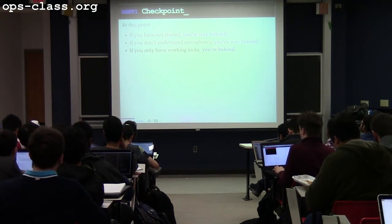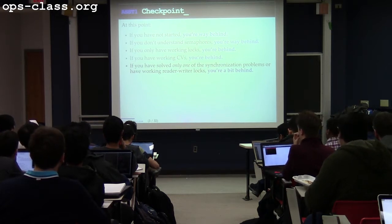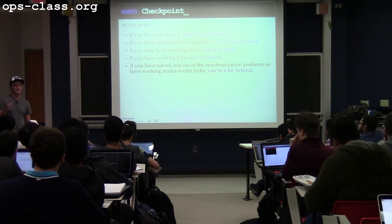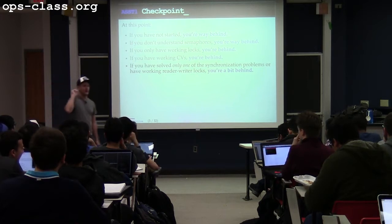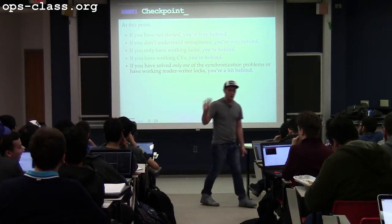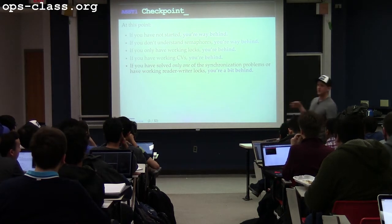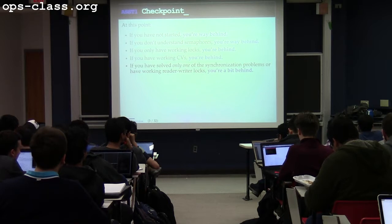Where you should be at this point is working on the second of the three other parts of the assignment — past locks and CVs — which are reader-writer locks, whale mating, and the stoplight problem. Hopefully you've solved one of those three problems and you're moving on to the second part. That's what you can work on for the rest of the week.